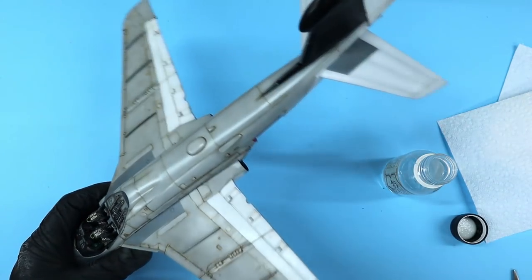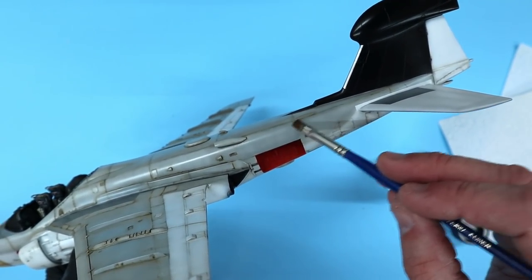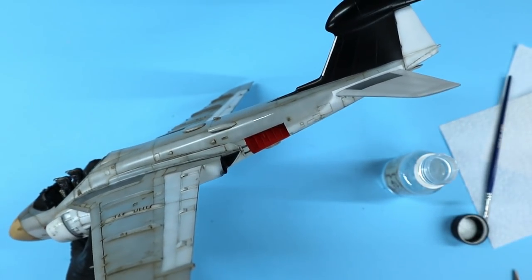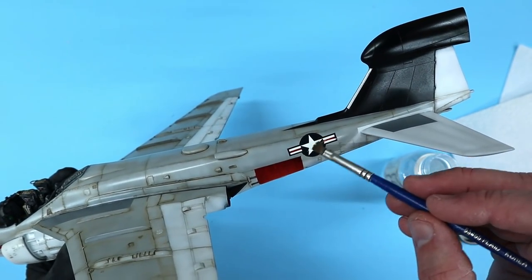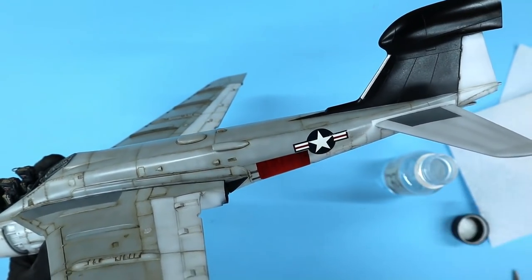With the main parts assembled, I clear coated everything using AK's Real Colors glossy. Once dry, I used AK's decal setting solution to apply all of the various decals. I put a little down before applying each decal and then add a little on top to help each decal settle down to the model's surface.